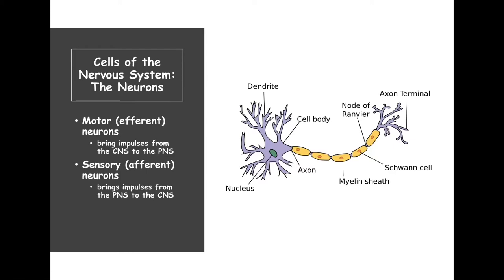First we're going to start off with a very important cell that we see primarily in the nervous system, and that is the neuron or the nerve cell. This is showing you the anatomy of the neuron and I'm going to have the other Dr. V talk about it.